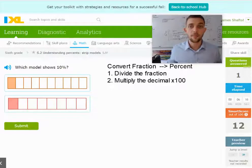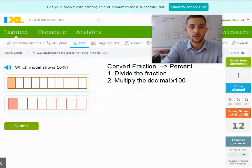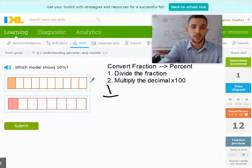In the next model, it asks which shows 10 percent. So I'm going to take the first fraction, which is 1, and there's 1, 2, 3, 4, 5, 6, 7, 8, 9, 10. So that's 1 tenth.